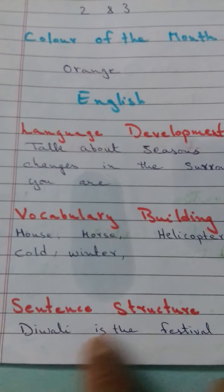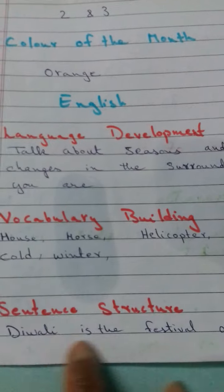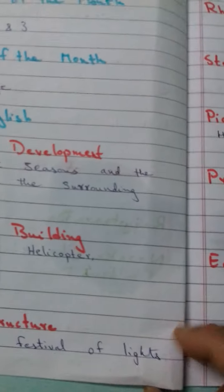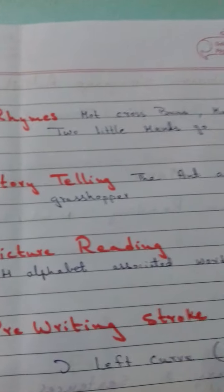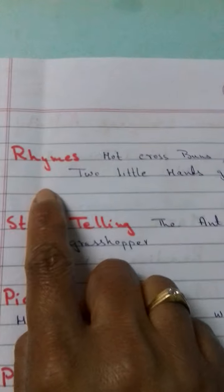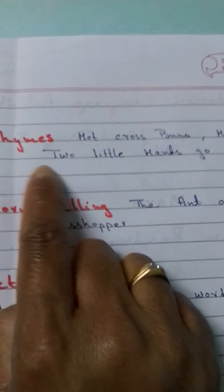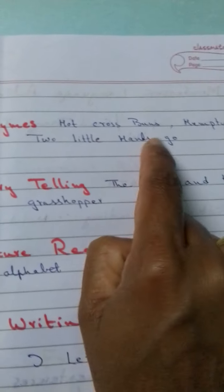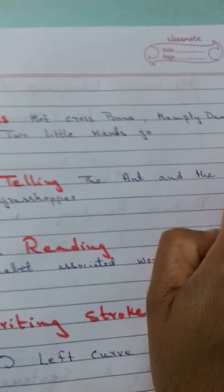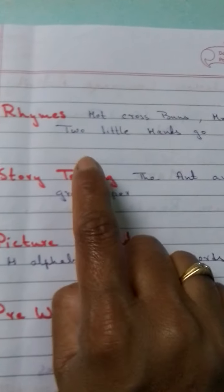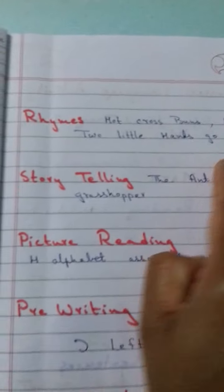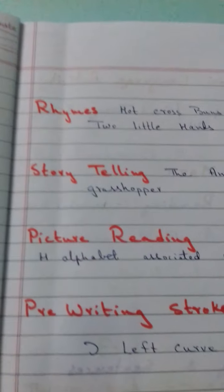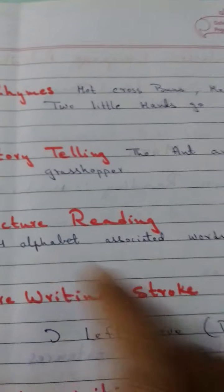Sentence structure is: Diwali is the festival of lights. Rhymes — you can go with Hot Cross Buns, Humpty Dumpty, and Two Little Hands Go Clap Clap Clap.